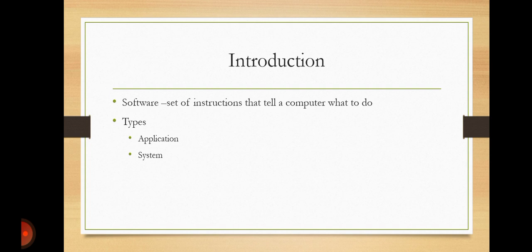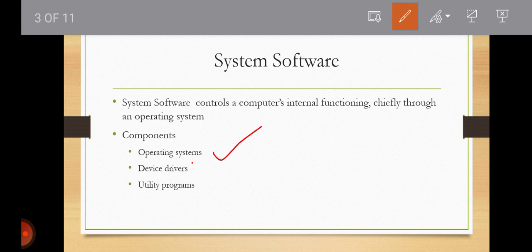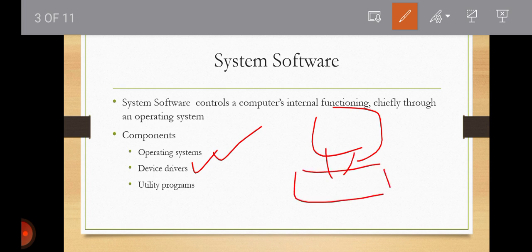When we talk about system software, which we normally find already installed when you buy a new computer, this system software enables the application software to interact with the computer and helps the computer manage its internal and external resources. There are only a handful of system software packages for personal computers. The three basic components of system software are: operating systems, which is the principal component; device drivers, which help the computer control peripheral devices — devices that are external to the computer.